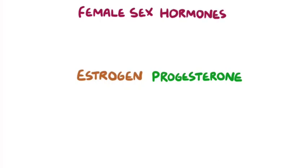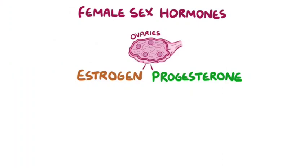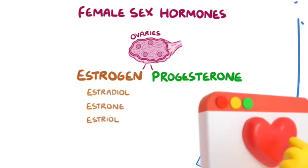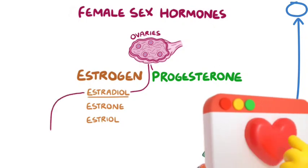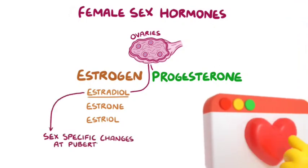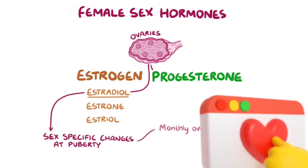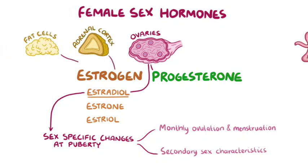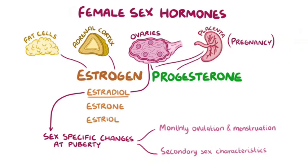Estrogen and progesterone are the female sex hormones, and they're produced mainly by the ovaries, the female gonads. The female body can synthesize three types of estrogens: estradiol, estrone, and estriol. Of the three, the ovaries synthesize estradiol, which is the most biologically active of all of them, and accounts for the majority of sex-specific changes that begin in puberty, like monthly ovulation and menstruation, as well as the development of secondary sex characteristics. Small amounts of estrogen are also produced by the adrenal cortex and fat cells in adipose tissue, and the placenta secretes these hormones during pregnancy as well. But during the reproductive period, it's the ovaries that produce the majority of estrogen and progesterone in the female body.